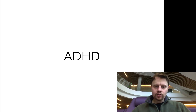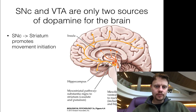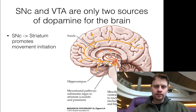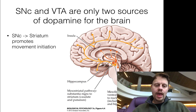I wanted to give a quick introduction and overview to ADHD, including brain pathways and symptoms. We've already talked about dopamine and the two sources of dopamine in the brain: the substantia nigra pars compacta and the ventral tegmental area, and the different projections that they make.